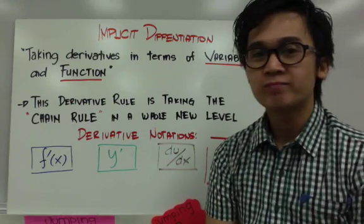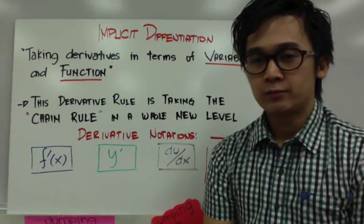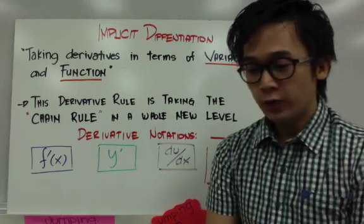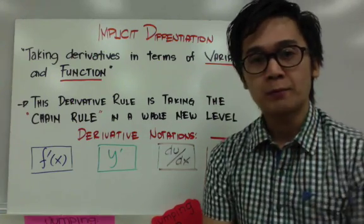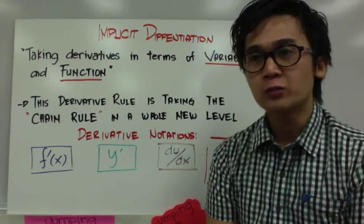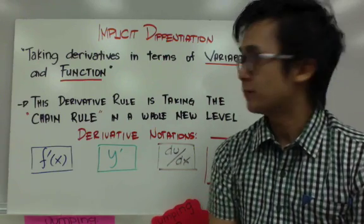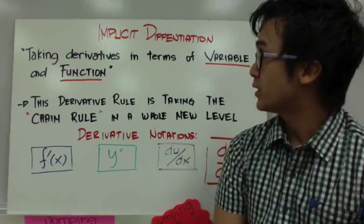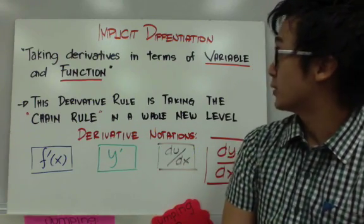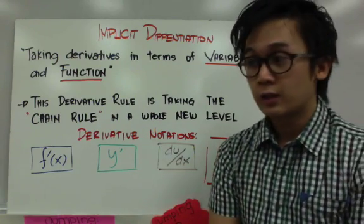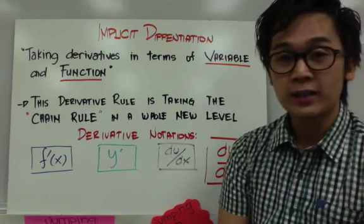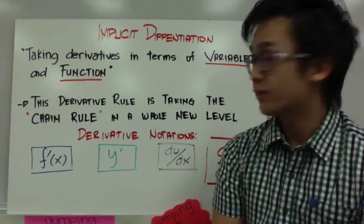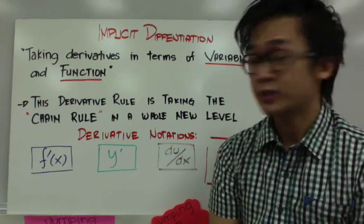So, ngayon, let's try to take the derivative of a function using implicit differentiation. Yung implicit differentiation, ginagamit siya kapag yung function mo merong x at merong y. By definition, implicit differentiation is taking derivatives in terms of variable and function. Kasi, pwede ka makakita ng two variables sa isang function at kailangan mo kunin yung derivative niya, kaya tayo gagamit ng implicit differentiation.